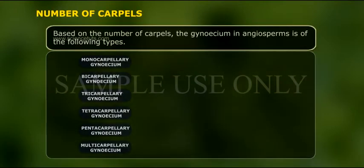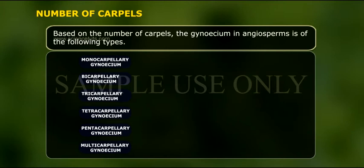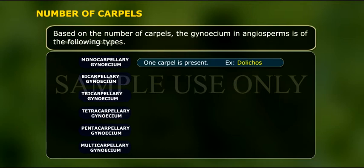Based on the number of carpels, the gynoecium in angiosperms is of the following types. Monocarpillary gynoecium: one carpel is present. Example: Dolichos.